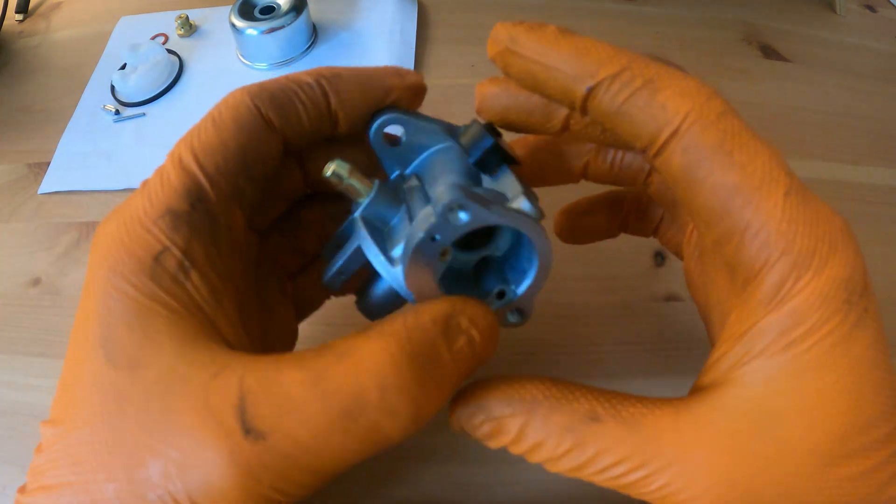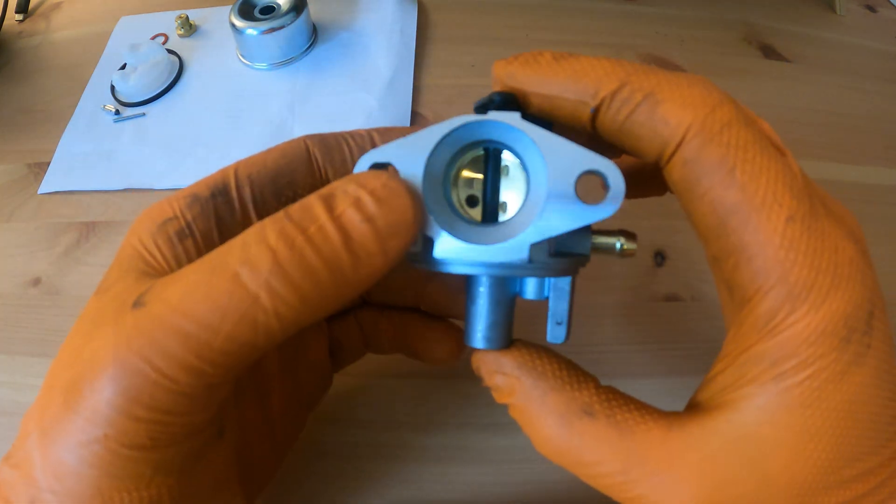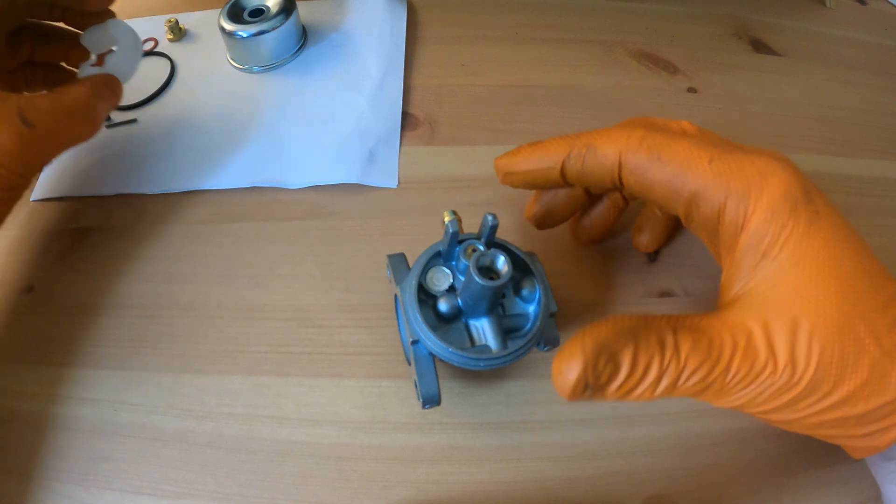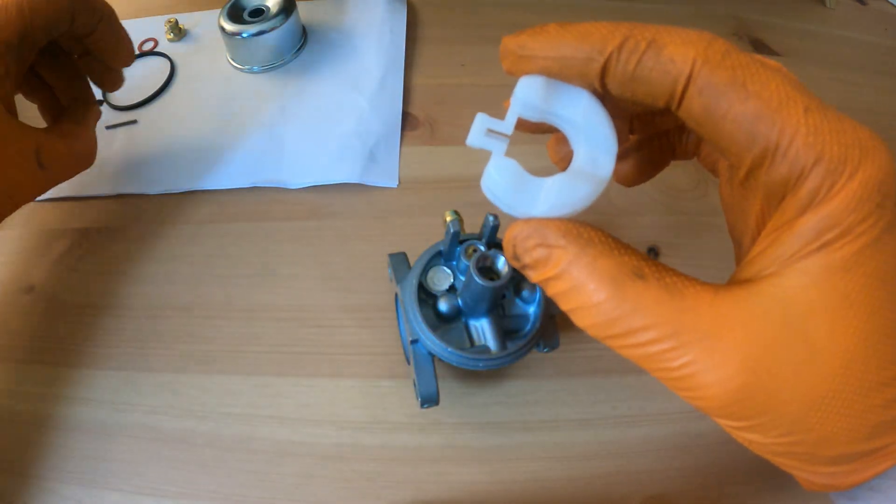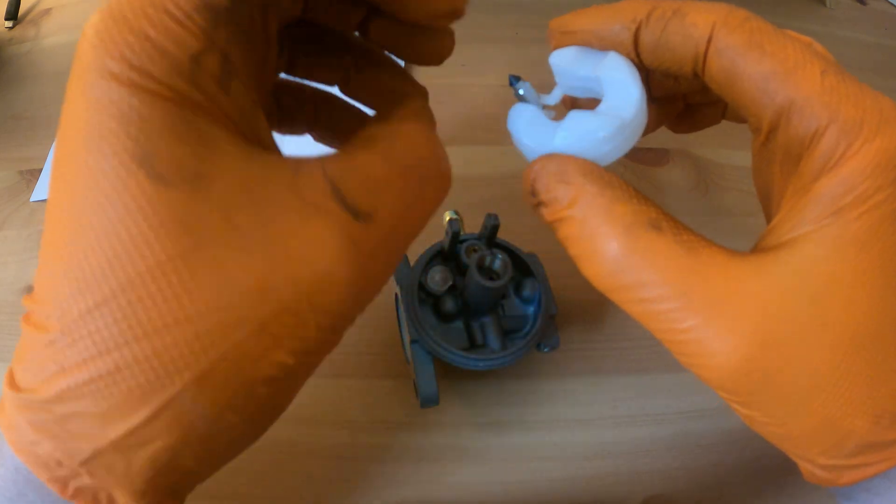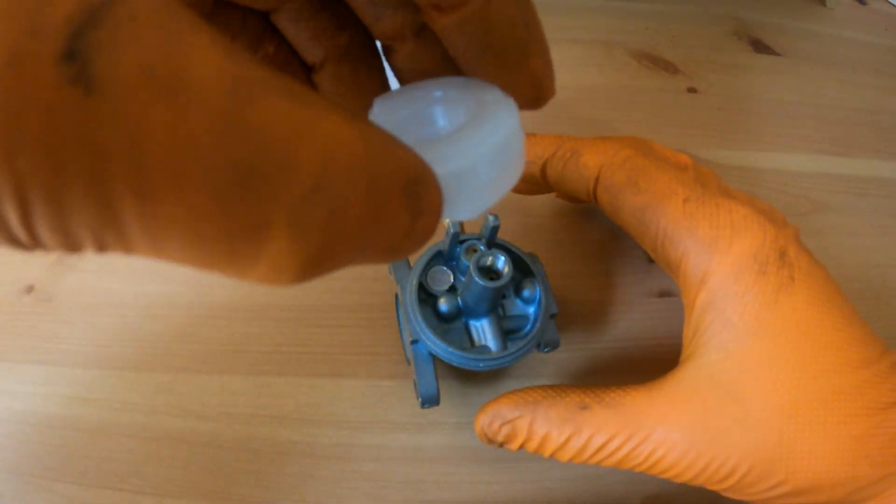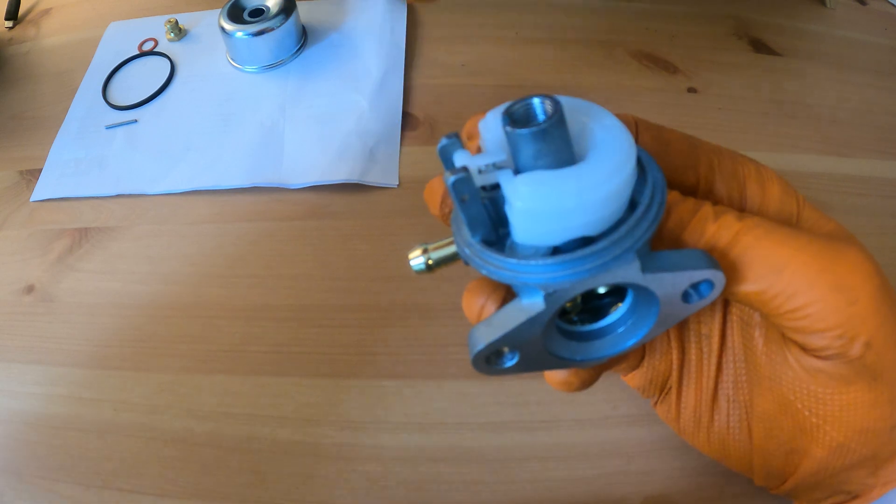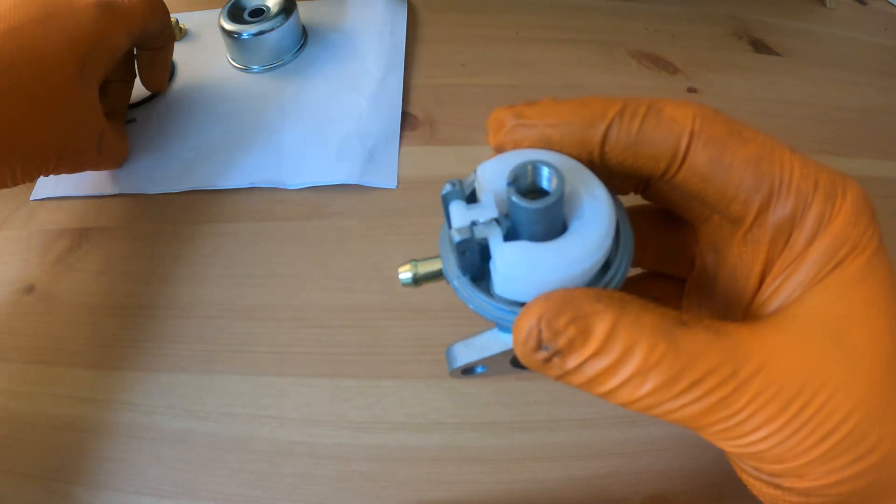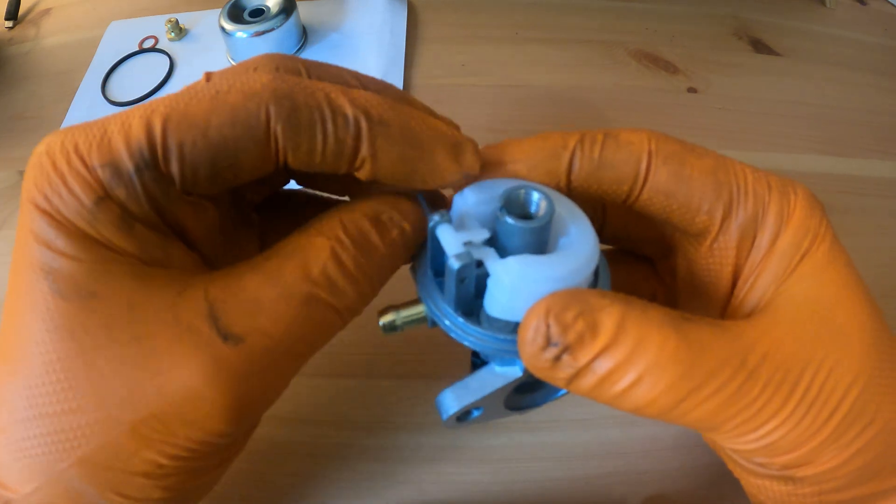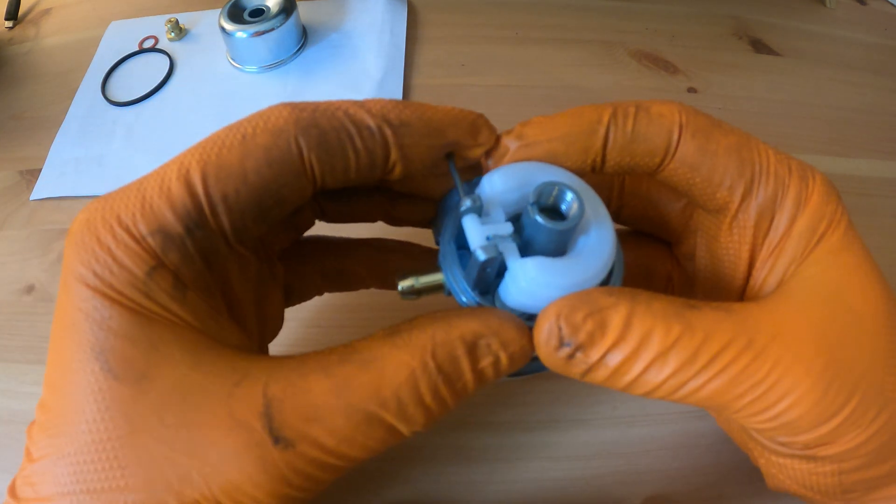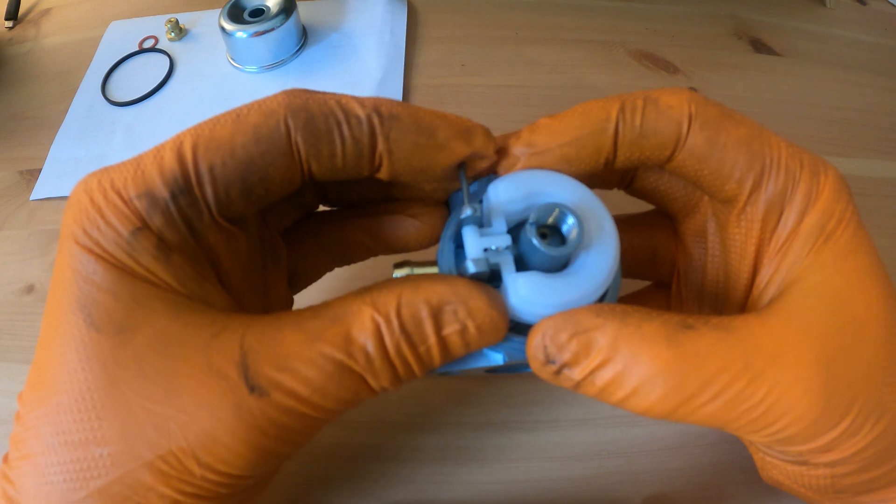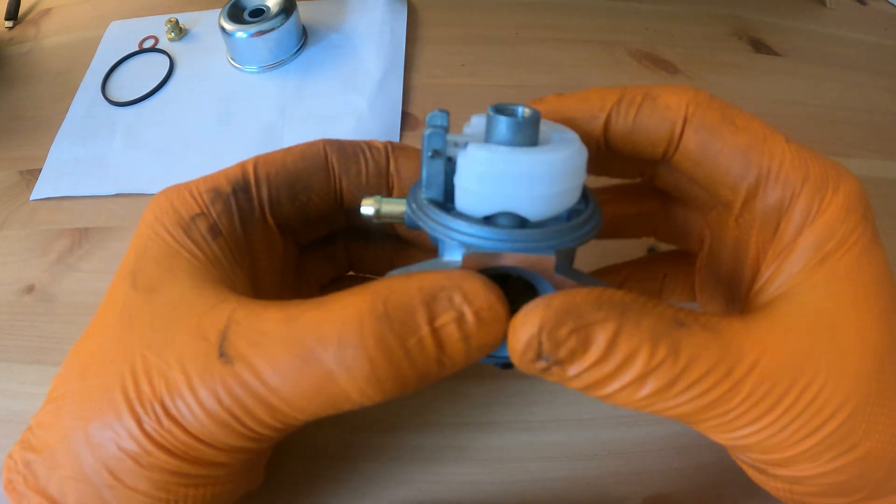Once you've done all that we'll go ahead and reassemble it. For reassembly it's very easy. We take our float and our inlet needle and just slide it over there. Invert it so you can see the needle there and we just put it into the seat. Then we take the pin and run the pin through both those supports there through the float.